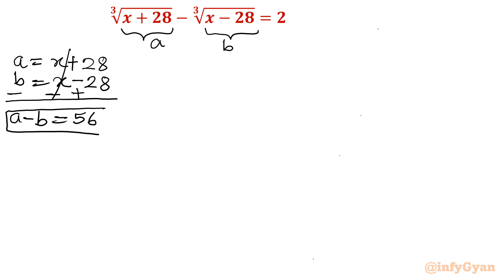This is our equation number 1. Now what will be the original equation? See it is cube root of a minus cube root of b equal to 2. This is our equation number 2. So from these two equations we will find out a and b first. Then we will get to know about what is the true value of x.